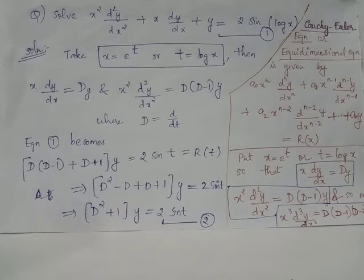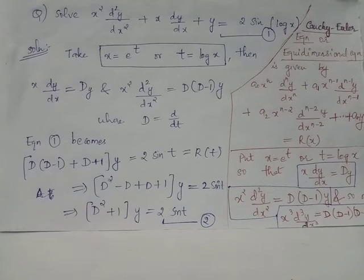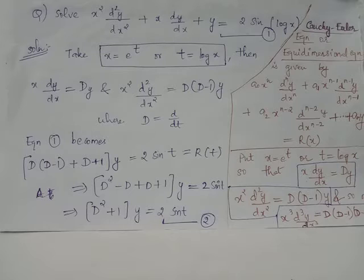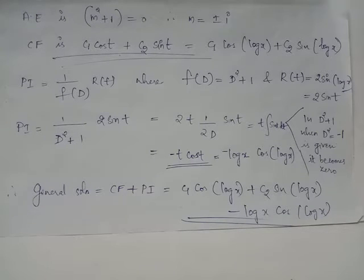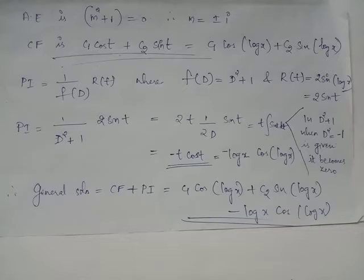Once we have found the solution of equation 2, in order to write the general solution of equation 1, the Cauchy-Euler type, we again make use of the transformation x = e^t or t = log x. The auxiliary equation m² + 1 = 0 has imaginary roots m equals plus or minus iota.